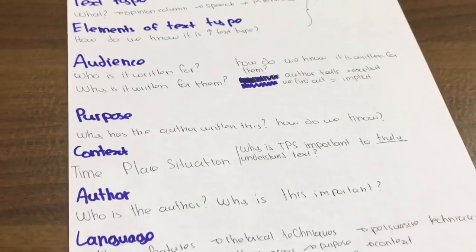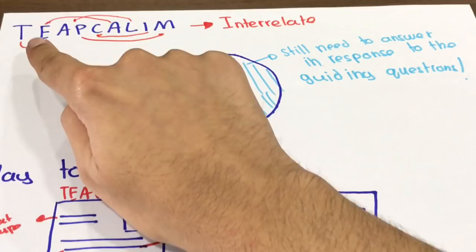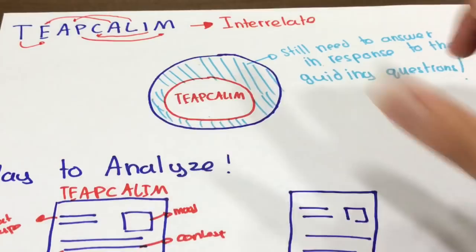So after you do this whole analysis, there are certain things you need to remember. You need to tailor all your points to the guiding questions, especially audience, purpose, meaning, and language. The guiding questions will help you pick out the points for the individual components of TEAP CALM. And what you need to understand is that many of these components interrelate with each other. You know, text type will interrelate with elements of the text type. The purpose will relate to the meaning. The image will relate to the context. So all these components interrelate with each other and you need to bring up those relationships.